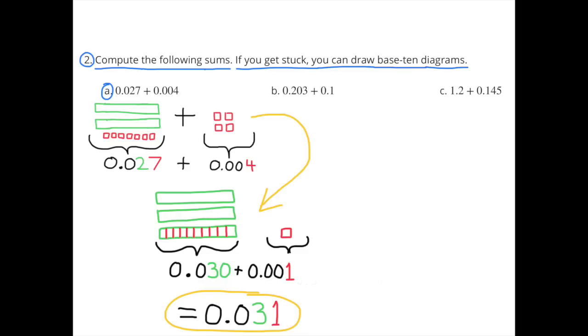Number 2: Compute the following sums. If you get stuck, you can draw base 10 diagrams. Part A: 0.027 plus 0.004.